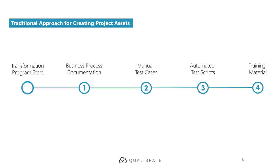If we think about a standard sales order process in SAP, documenting it, creating a manual or automated test case, or creating training — you're actually describing the same thing. Very often in these organizations, there are different steps, different users, and potentially different tools for these different activities. The change management process becomes a huge overhead, and the documentation, test cases, automated scripts, or training material gets out of date. You end up failing automated tests for the wrong reasons, or end users are unable to learn because the training material is out of date. That's exactly the problem that QualiBrate is solving.